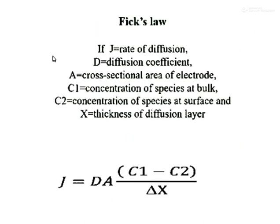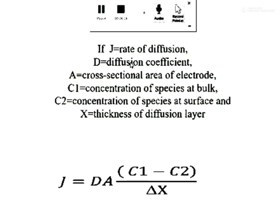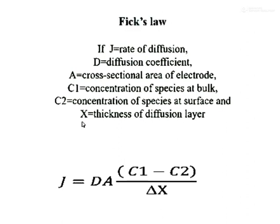According to Fick's law, current is generated due to concentration gradient. The rate of diffusion is equal to the diffusion coefficient multiplied by the cross-sectional area and the concentration gradient term.